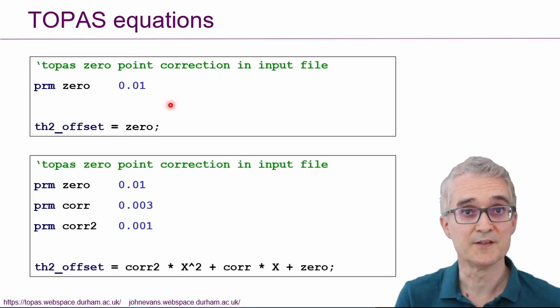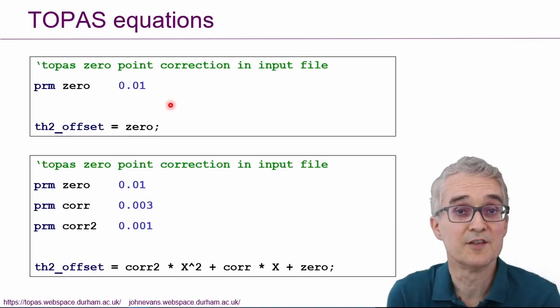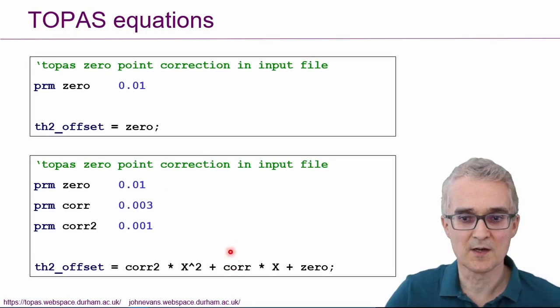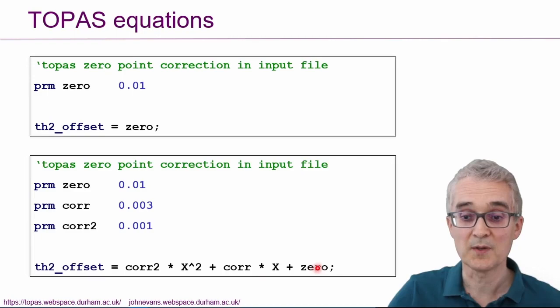So that was a way of just repeating what one of the built-in macros in TOPAS is already doing. But you can very easily see that perhaps it might be that for your particular diffraction experiment, a simple linear offset in 2θ isn't going to be sufficient to describe your data. So you could imagine writing a slightly more complex example, like at the bottom of the screen here, where instead of just describing a parameter called zero, you have two extra parameters defined called corr and corr2. And you could feed those into a simple polynomial, which says to TOPAS, the 2θ offset is something times 2θ squared plus something times 2θ plus a constant.